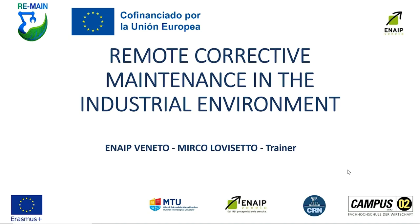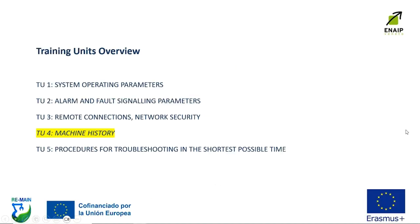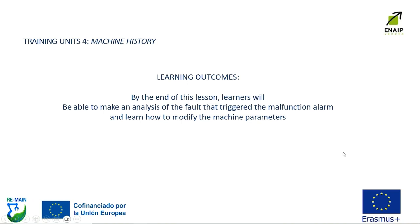Welcome to the REMAIN project training module on remote corrective maintenance in the industrial environment. This module has been prepared by Mirko Lovisetto, trainer at ENIPE Veneto VIT Center. Welcome to training unit 4: Machine History. By the end of this lesson, you will be able to make an analysis of the fault that triggered the malfunction alarm and learn how to modify the machine parameters.